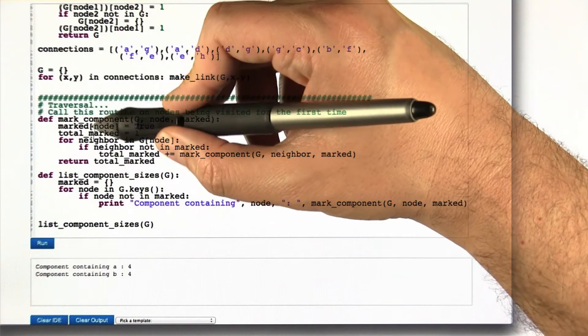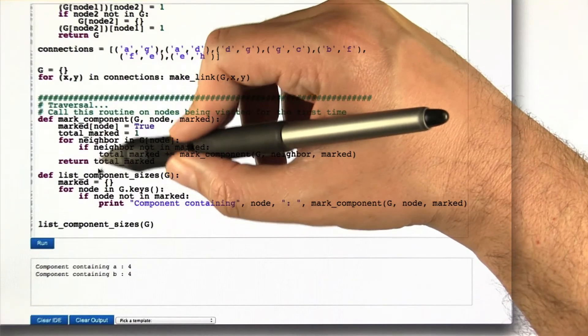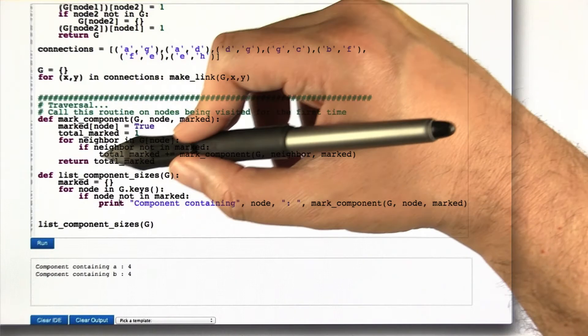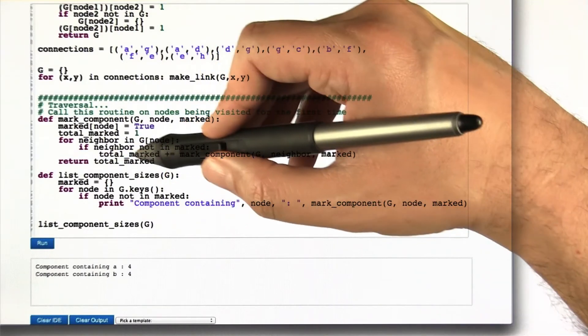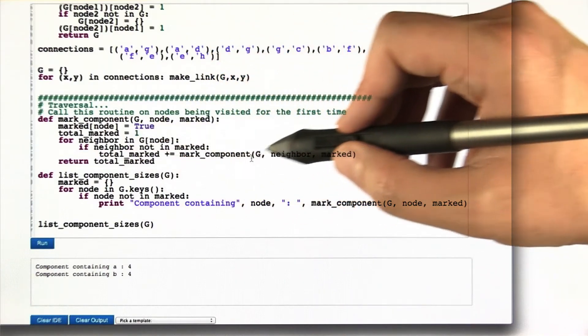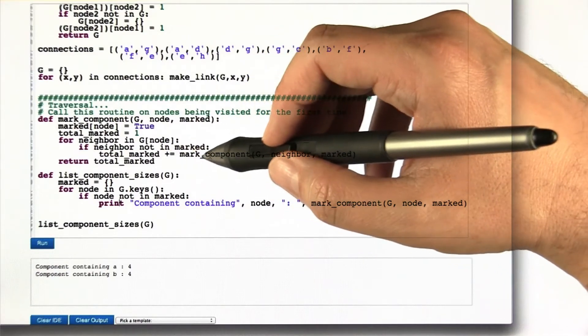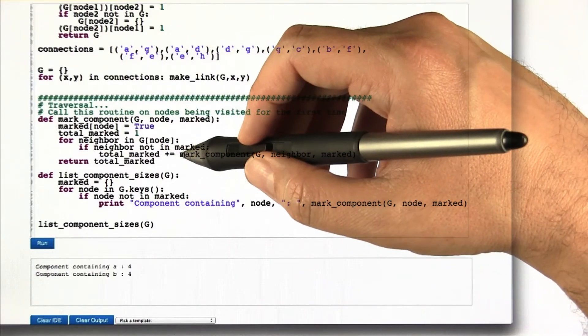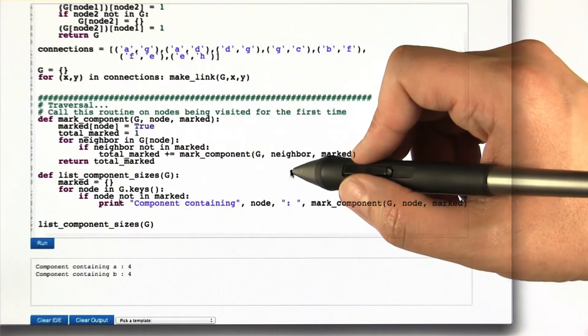These statements here are going to get executed once per node. This statement is going to get executed once per edge in the graph because for each node, it's going to visit all the edges emanating from that node. Even though it's very difficult to keep track of what's going to be executed when, we know that the total running time here is going to be big theta of the number of nodes plus the total number of edges in the graph.